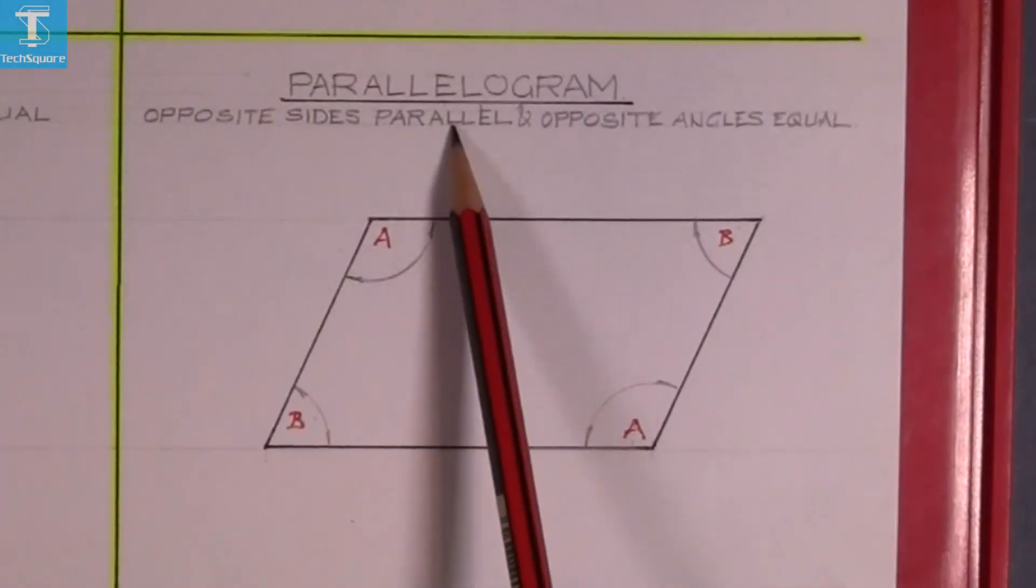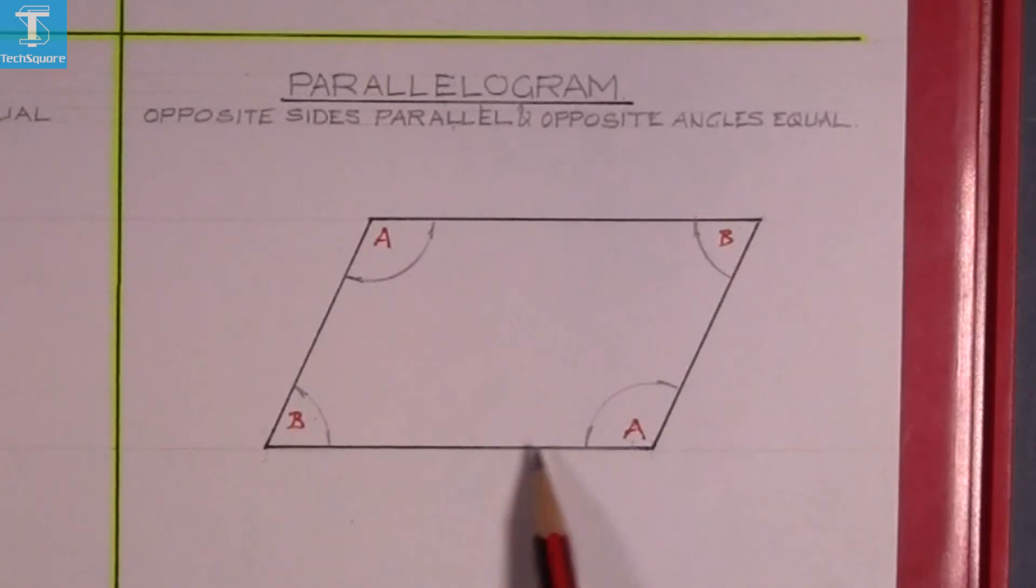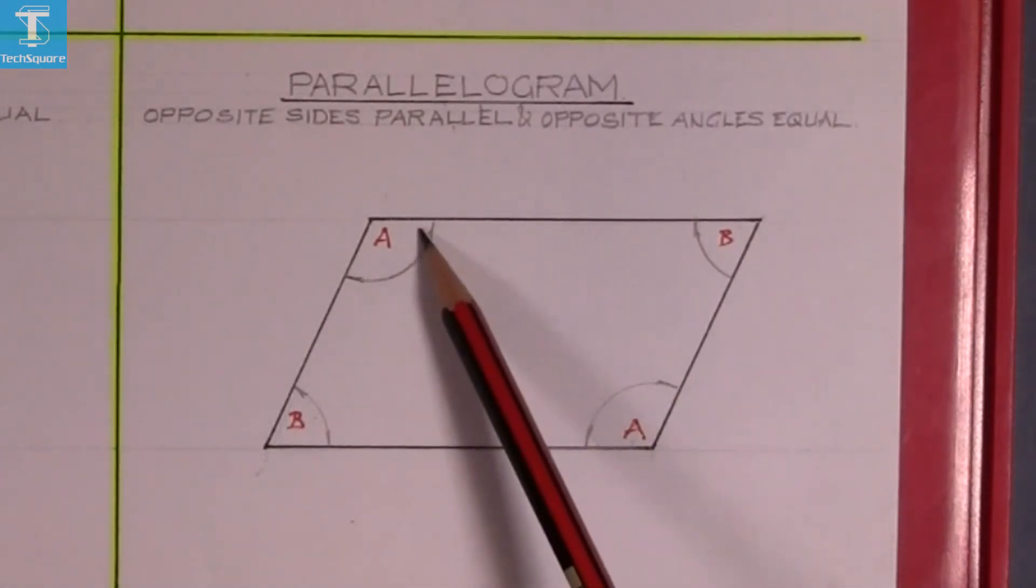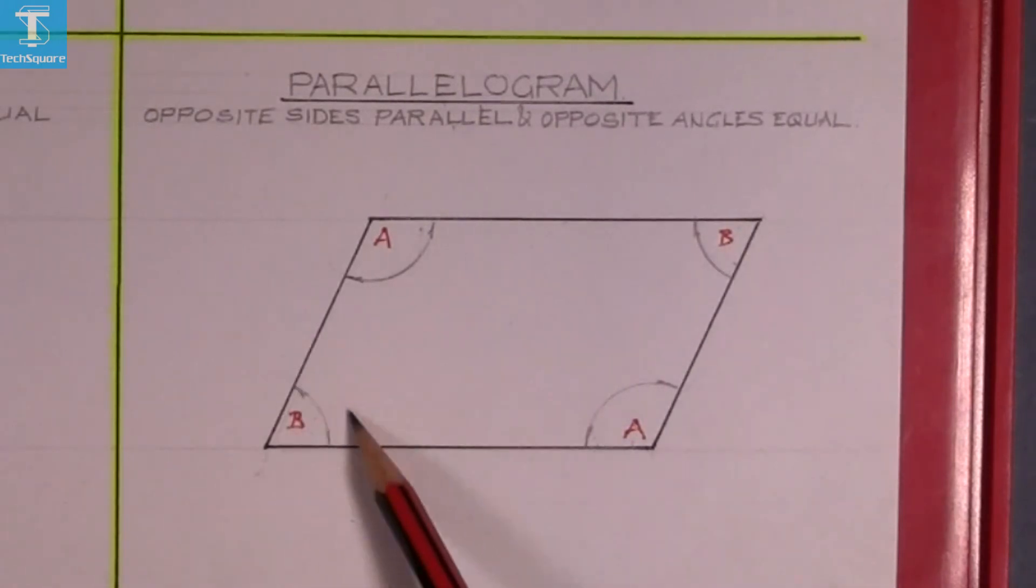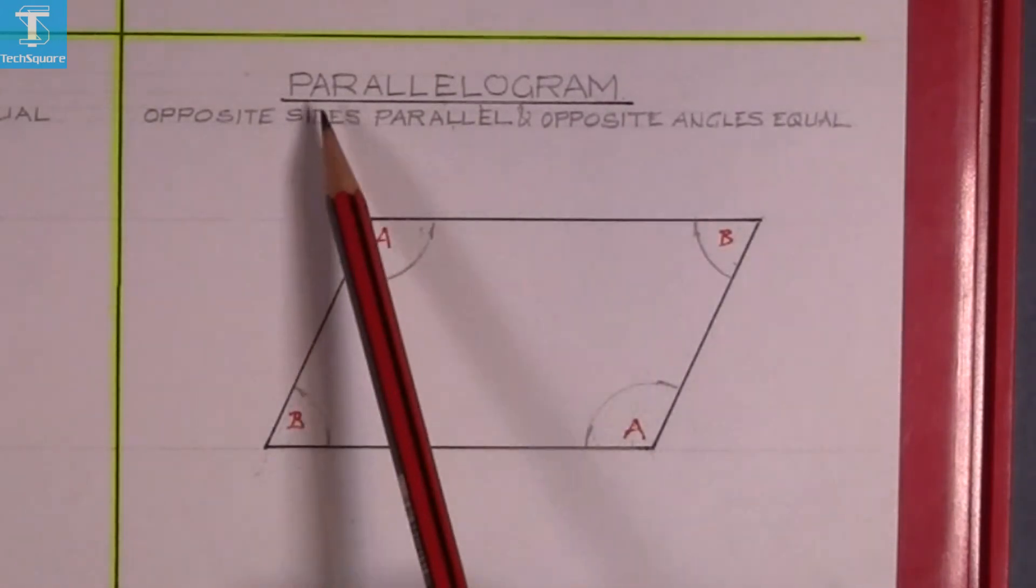Opposite sides parallel and again these two the same. And opposite angles are equal. A is equal to A over here and B is equal to B here. And that's called a parallelogram.